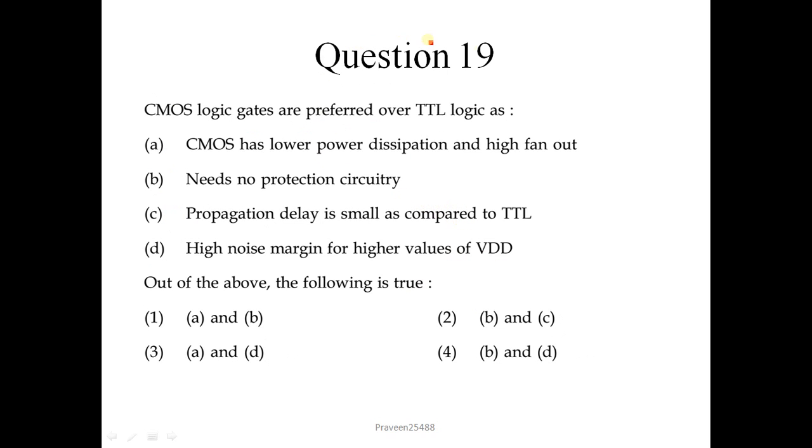Question number 19: CMOS logic gates are preferred over TTL. CMOS has lower power dissipation and high fan out, so this is correct. Needs no protection circuit - this is not correct. Propagation delay is small as compared to TTL - this is also not correct. And high noise margin for higher value of VDD, this is correct. So A and D is correct. Correct option is 3.